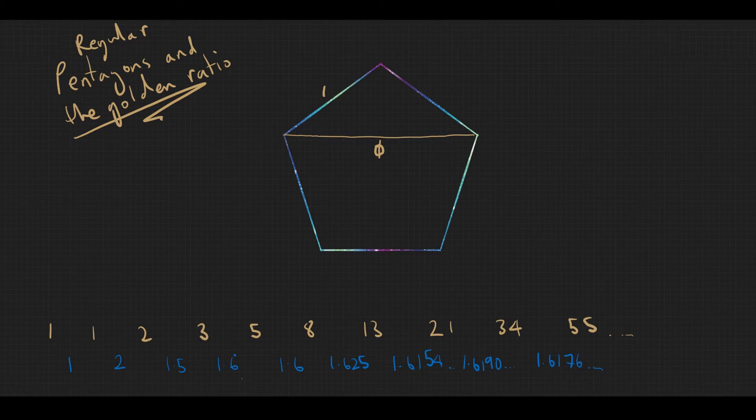The golden ratio is famous for giving you the most pleasing rectangles. Lots of buildings are built in the golden ratio. If the height is 1 and you do a length of phi, then you get a beautiful rectangle. One of the critical properties of the golden rectangle is that it always divides into a square and another golden rectangle.